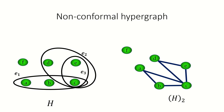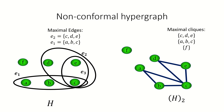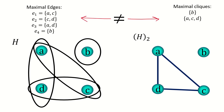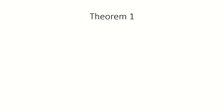Notice that if a hypergraph has an isolated vertex, that vertex is a maximal one-clique in the two-section that is not a maximal by inclusion edge in the hypergraph. This demonstrates that hypergraphs with isolated vertices can't be conformal. Also, under our current definition, a hypergraph with at least one vertex and only one edge that happens to also be an empty edge would not be considered conformal. Here's a less trivial example of a non-conformal hypergraph.